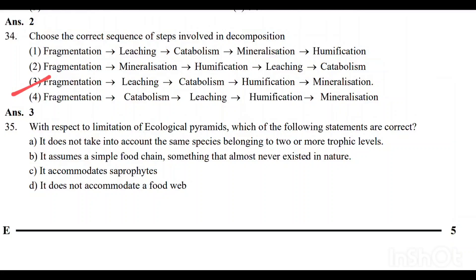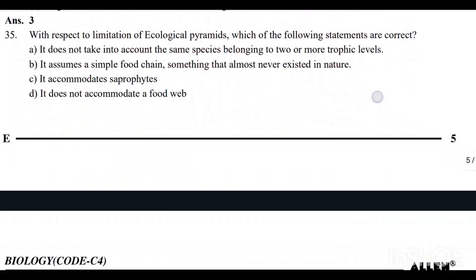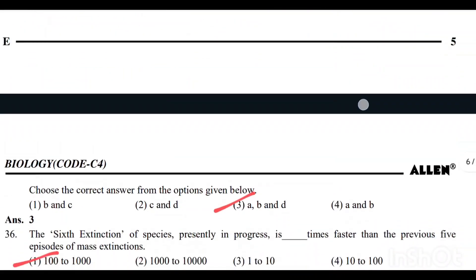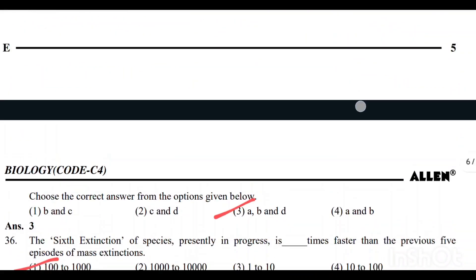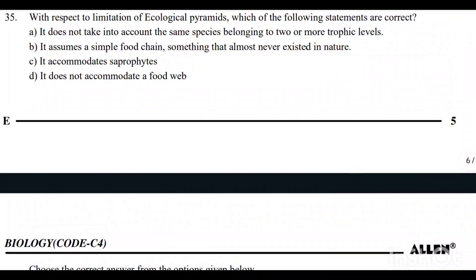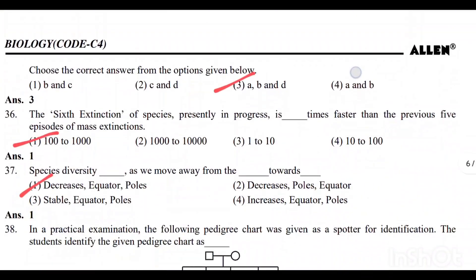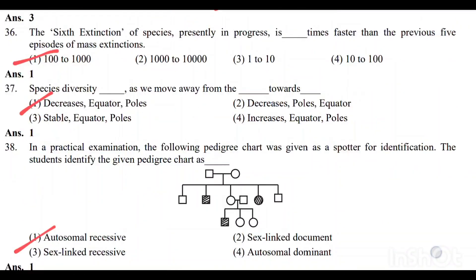Question number 35: With respect to limitations of ecological pyramids, which two of the following statements are correct? Option 3 — ABD — is the correct answer. Question number 36: Option 1, 1000, is the correct answer.